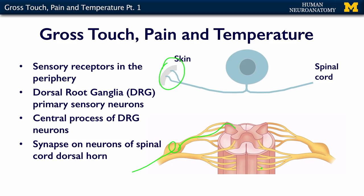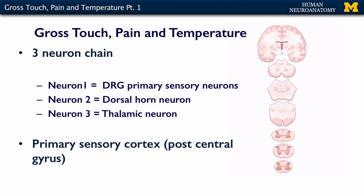Gross touch, pain, and temperature are actually going to synapse within the dorsal horn of the spinal cord. Gross touch, pain, and temperature is a three-neuron chain — it takes three neurons to relay that sensation from the periphery all the way into your somatosensory cortex. Neuron one lives in the dorsal root ganglion, as we've discussed.